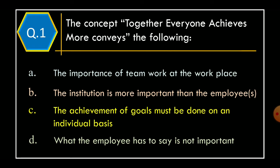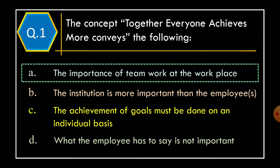Question 1. The concept 'together everyone achieves more' conveys the following. Option A: The importance of teamwork at the workplace. Option B: The institution is more important than the employees. Option C: The achievement of goals must be done on an individual basis. Option D: What the employee has to say is not important. The correct option is Option A: The importance of teamwork at the workplace.